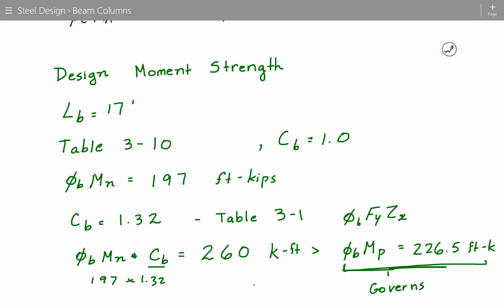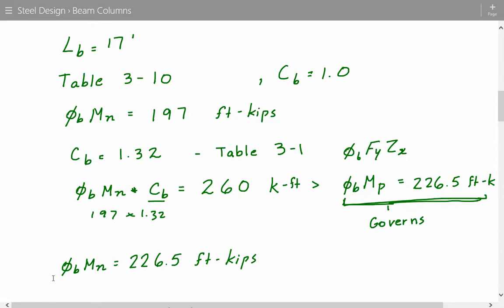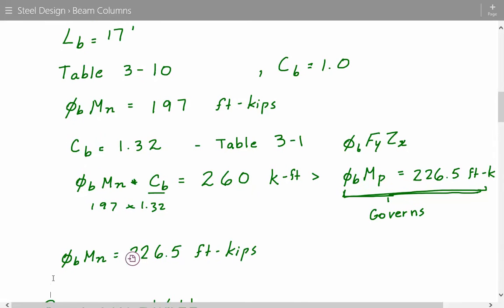So this value, the plastic strength, will be the governing value. So now we have our governing moment strength, and that's 226.5 kip feet, which is also our plastic strength.